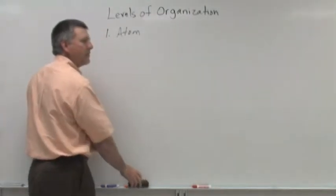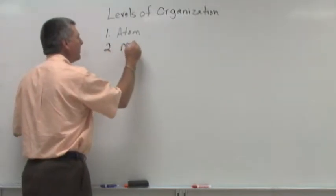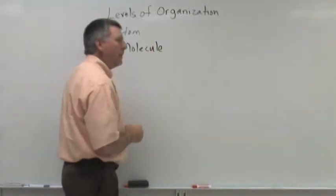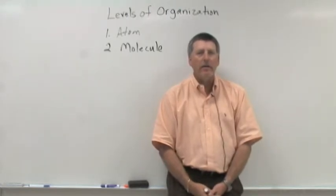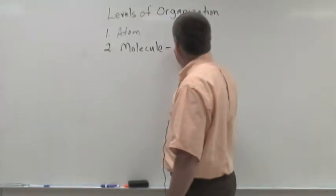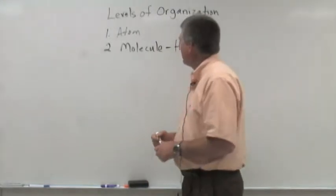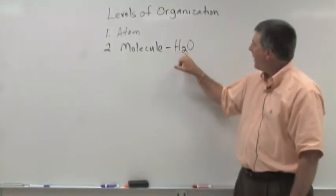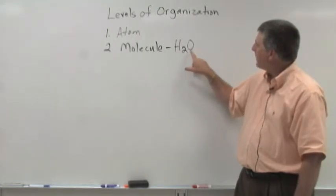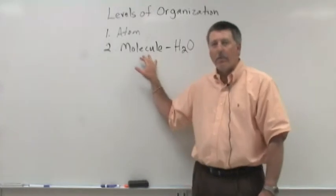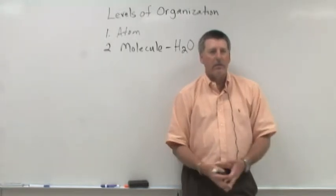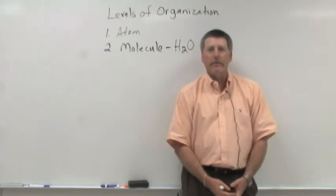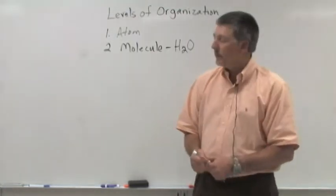People who study atoms are called chemists. The next level of organization is the molecule level. We have a molecule when two or more atoms are chemically combined. A good example of a molecule would be a water molecule. And of course a water molecule is composed of two hydrogens and an oxygen. So we have two hydrogen atoms and an oxygen atom that make up a molecule of water. So here we have three atoms that are chemically combined. We could talk about larger molecules like glucose or DNA and we'll talk about all of these later.